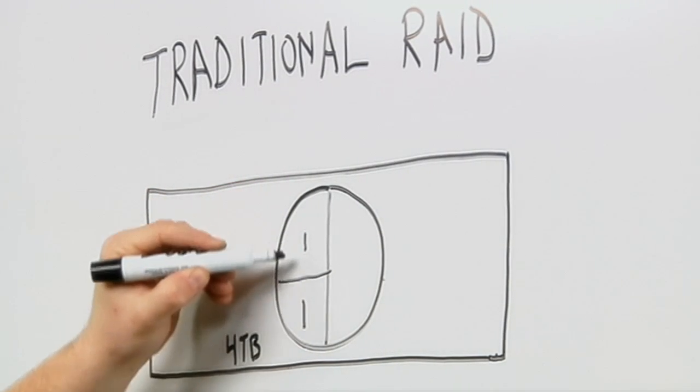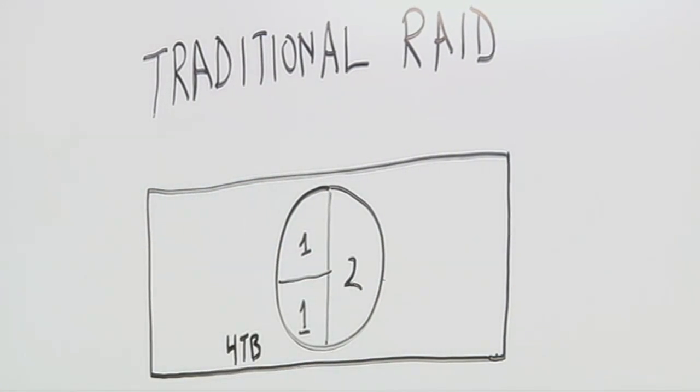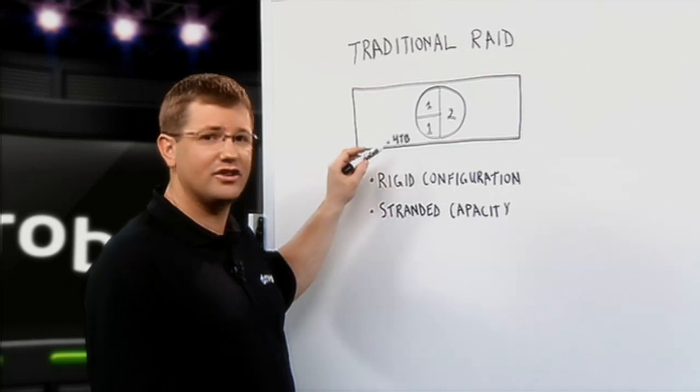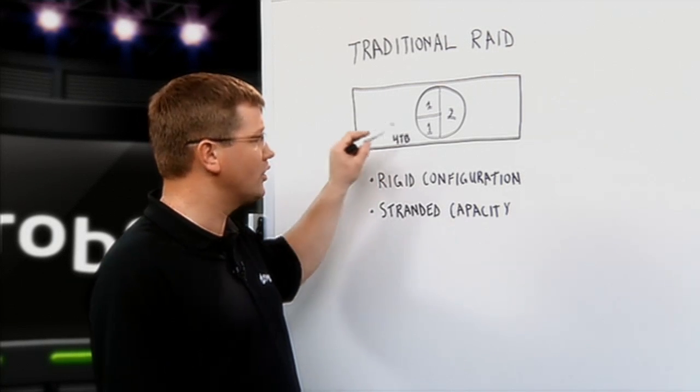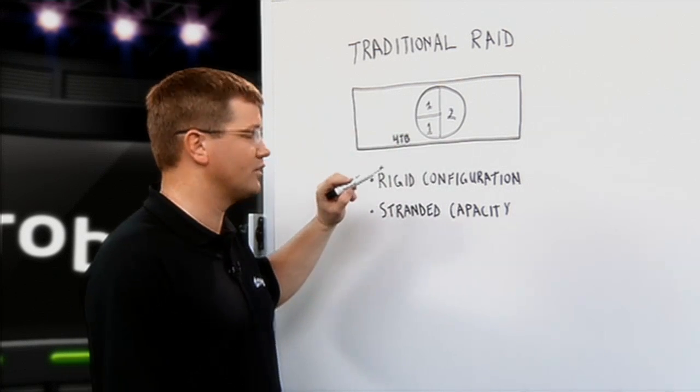We're going to create two one terabyte volumes here and one two terabyte volume. Now that utilizes all four terabytes of capacity, so now all your available capacity is allocated to these volumes which is allocated to servers.